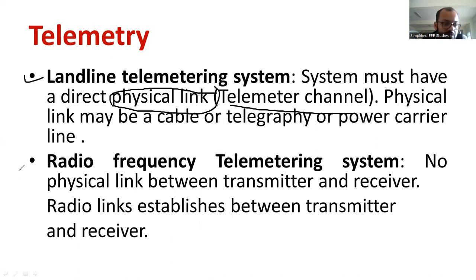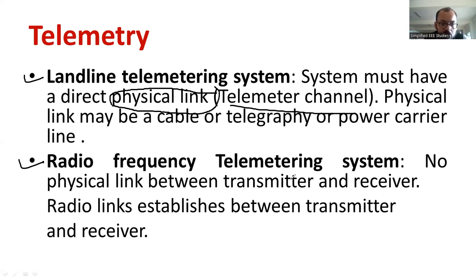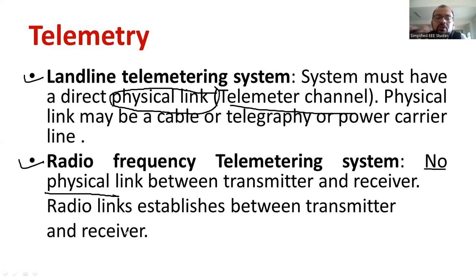Another type of telemetry system is the radio frequency RF telemetry system. It is wireless — we are not using any wire at all. It is a wireless transfer in the form of higher frequency. There is a carrier signal and a modulating signal, but no physical link between the transmitter and receiver. A radio link is established between transmitter and receiver, similar to a communication system. You may have studied amplitude modulation and frequency modulation. This system operates completely without any power line, carrier line, or cable.